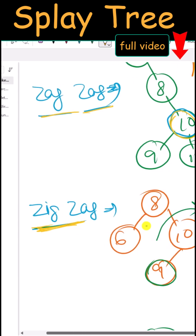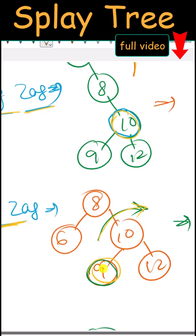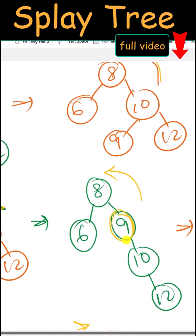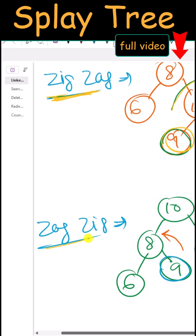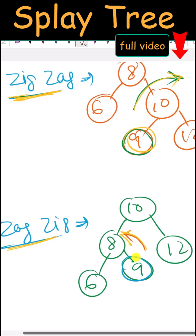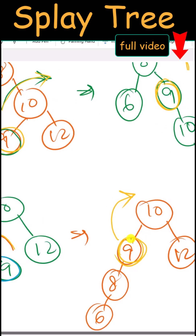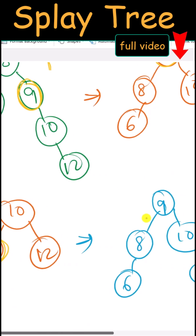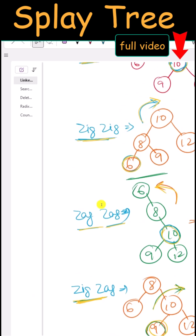We also have the zig-zag rotation, where first we perform one right rotation so that 9 is right-rotated into position, and then we perform a zag (left) rotation so that 9 becomes the root node. Lastly, we have the zag-zig rotation, where first we perform one left rotation and then one right rotation so that 9 becomes the root node.